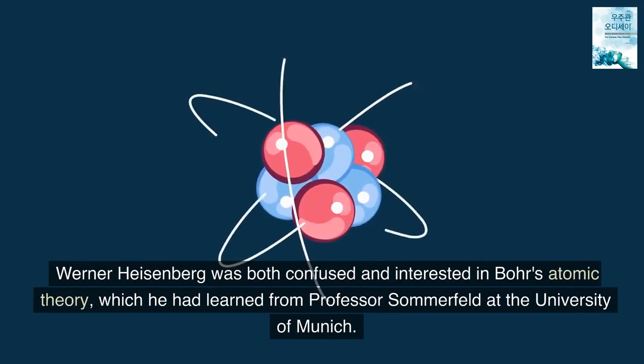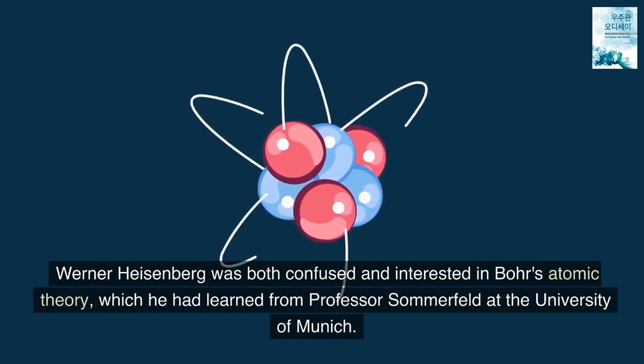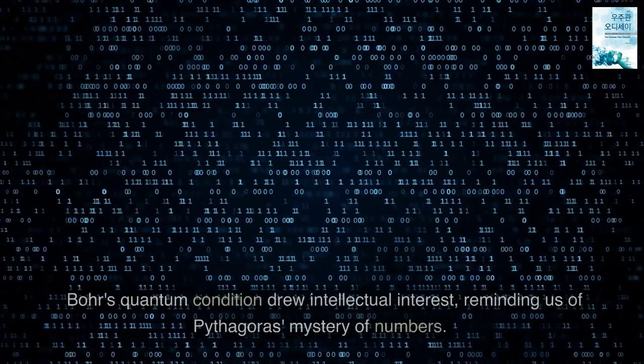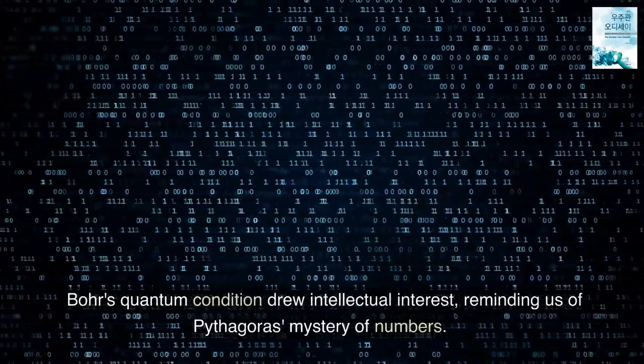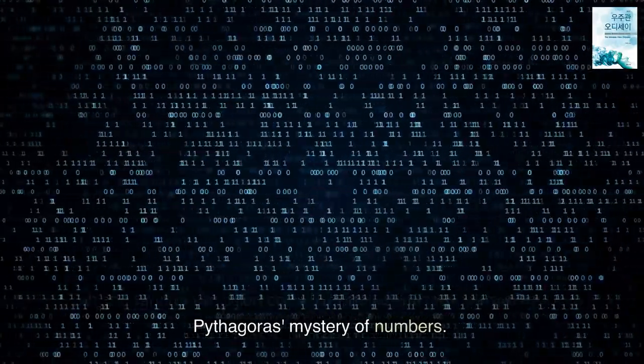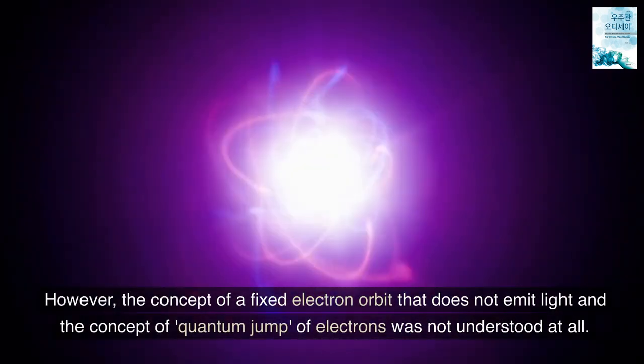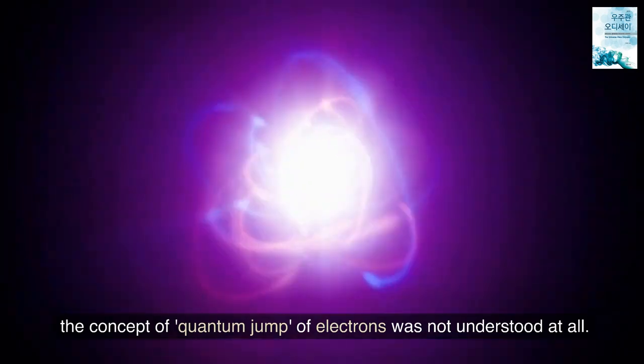Werner Heisenberg was both confused and interested in Bohr's atomic theory, which he had learned from Professor Sommerfeld at the University of Munich. Bohr's quantum condition drew intellectual interest, reminding us of Pythagoras' mystery of numbers. However, the concept of a fixed electron orbit that does not emit light and the concept of quantum jump of electrons was not understood at all.